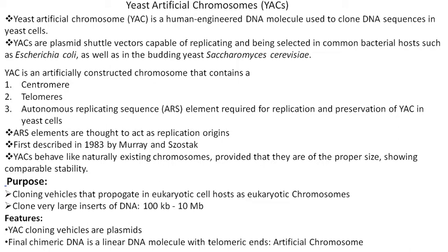YAC behaves like naturally existing chromosomes, provided that they are of proper size, showing comparable stability. The purpose of making YAC is as a cloning vehicle that propagates in eukaryotic cells as well as prokaryotic cells. The clone size can vary — a gene of interest from 100 kb up to 10 Mb can be cloned in YAC vectors.